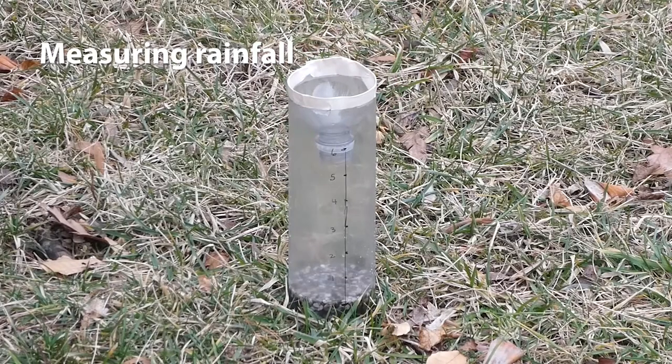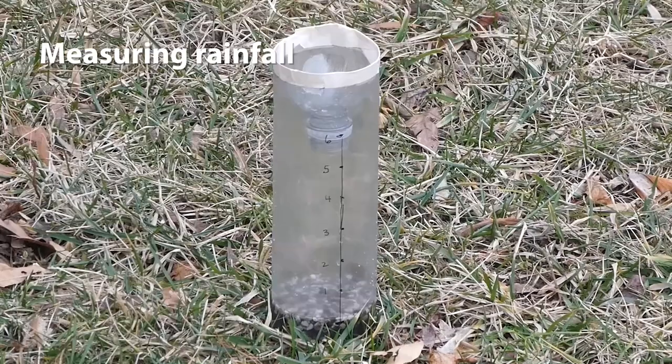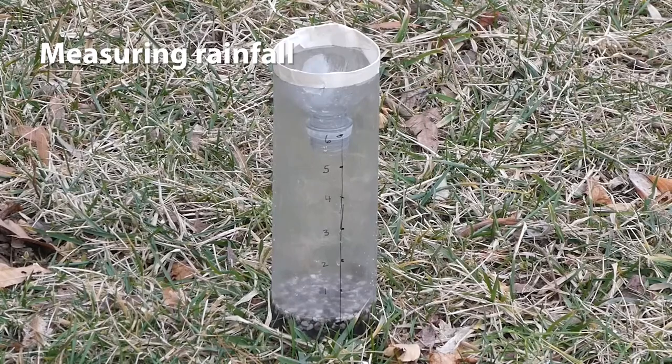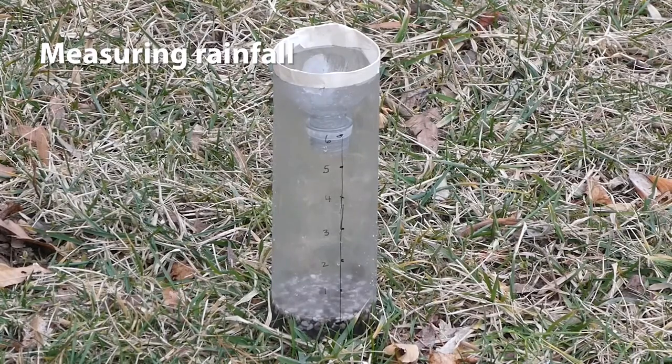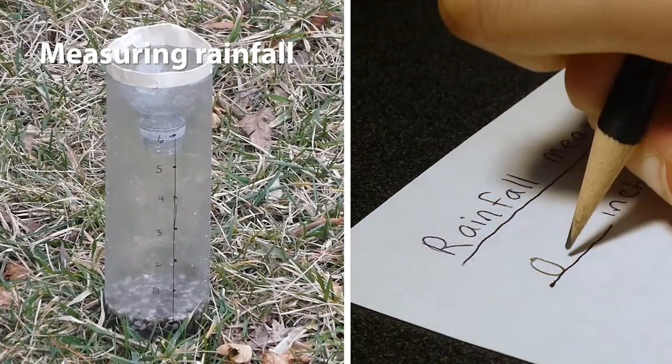Now that you have your rain gauge, place it outside in an open area so it can collect rain. Make sure that it's secure so that it won't fall over and that it's not leaning against your house. Then record rainfall measurements each hour.